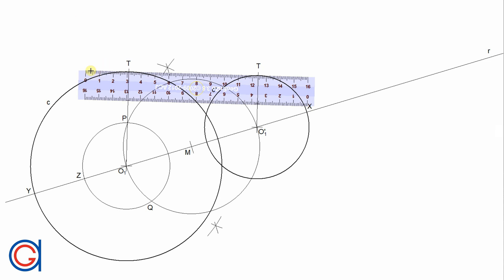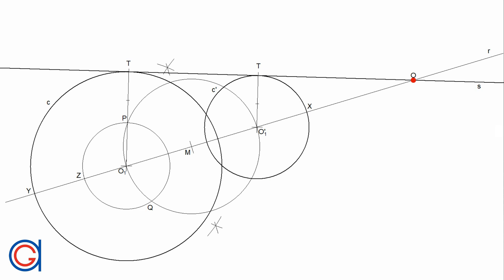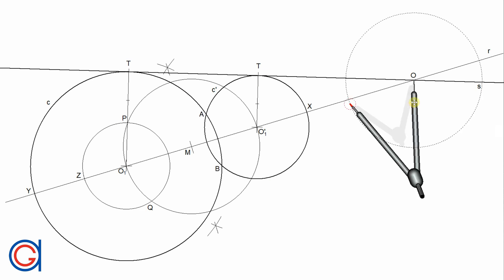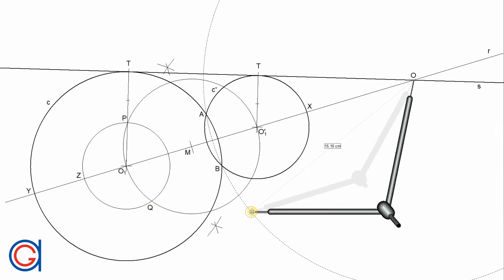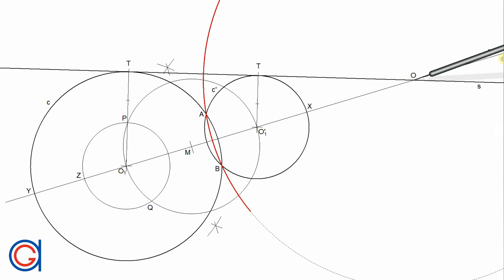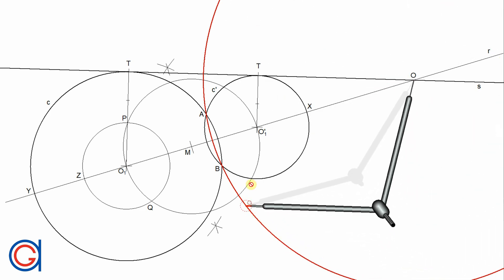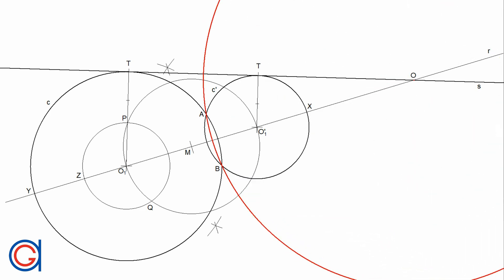The next step is to draw the tangent line S connecting both tangent points and elongating it until it cuts line R, as shown. Where it cuts line R will be the center point O of the mid-circle we want to draw, highlighted here in red. And finally, to draw the mid-circle, set our compass on point O and with a radius OA or OB, we draw the circle as can be seen here highlighted in red. So finally we obtain our mid-circle.